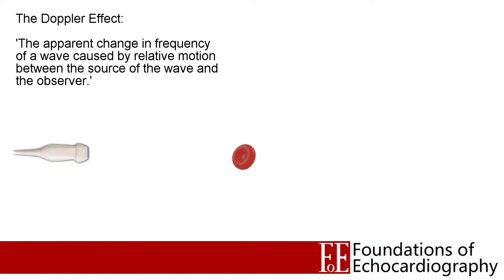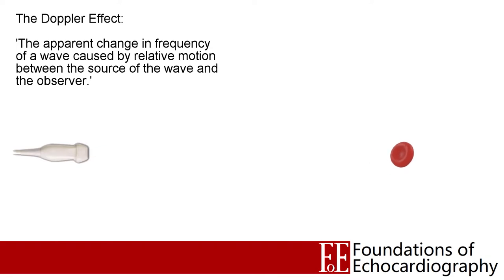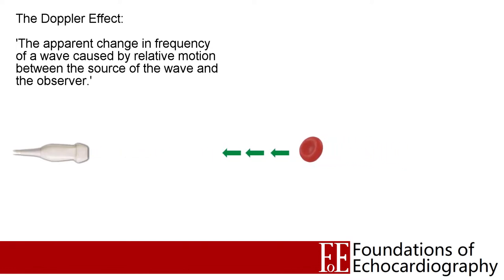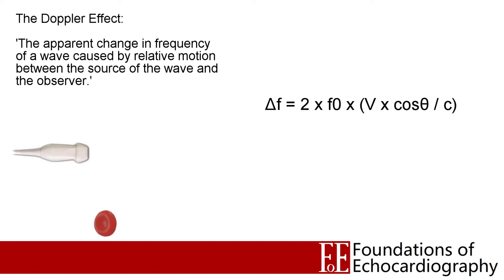Now let's imagine what happens if the red blood cell is moving away from our probe as the wave strikes it. Here you can see that the frequency of the wave decreases, and the magnitude of that shift will be dependent on the velocity of the red blood cell — how quickly it's moving away from our probe. Likewise if the red blood cell is moving towards the probe, then the frequency of the wave will increase and the gaps between each of the green arrows will shorten. The relationship between the velocity of the blood and the magnitude of the frequency shift is described in the Doppler equation.